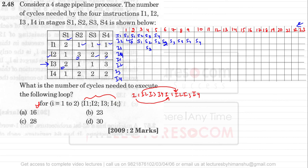I2 is placed in stage S1 at the third clock cycle because that is when S1 first becomes available. Similarly, I3 can only enter stage S1 at the fourth clock cycle, which is when S1 becomes available for it. Since I3 requires two clock cycles in S1, it occupies S1 at clock cycles 4 and 5.